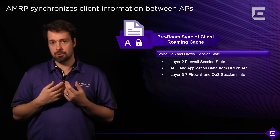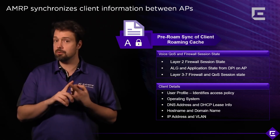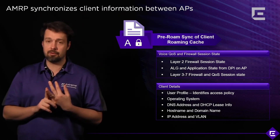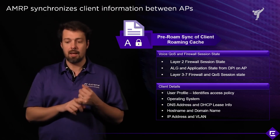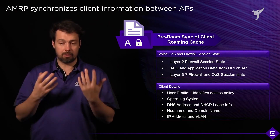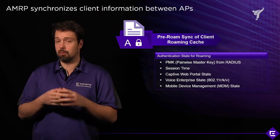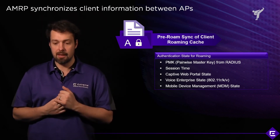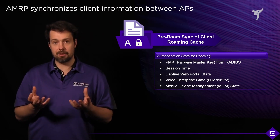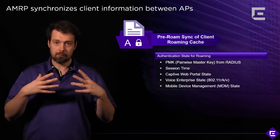The client roaming cache also includes information related to the client itself and network access control — things like the user profile being used, the operating system, where the IP address came from, where DNS resides, and what VLAN is assigned to the client device. For authentication, it will cache the PMK (pairwise master key) from the RADIUS server or if generated locally from the local AP, as well as session time and captive web portal status information.